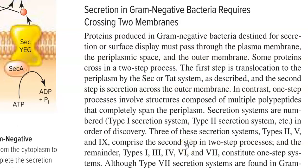We now look at the secretion systems predominantly present in gram-negative bacteria. Proteins produced in gram-negative bacteria that are destined for secretion or surface display must pass through the plasma membrane into the periplasmic space and finally to the outer membrane. Some proteins synthesized in gram-negative bacteria need to cross through a two-step process in order to be secreted.